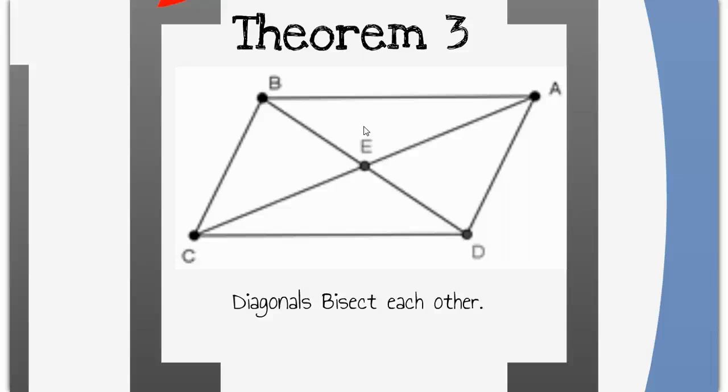And remember, when you get something that bisects something else, the most important piece of information from that is it creates two congruent segments. So again, BE is congruent to ED, and EC is congruent to AE.